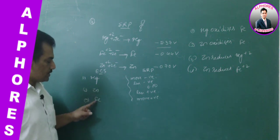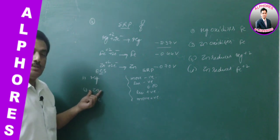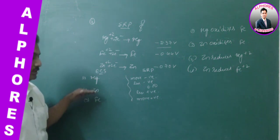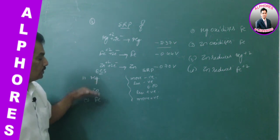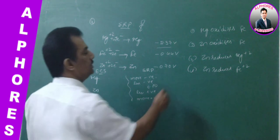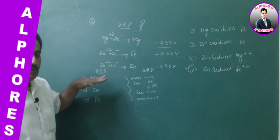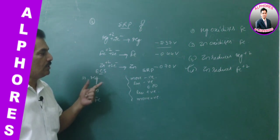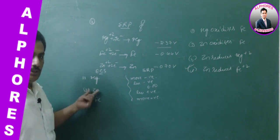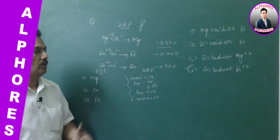Next, zinc reduces magnesium — magnesium is above and zinc is below, so zinc cannot reduce magnesium ions; that is wrong. The last statement is zinc reduces iron. Zinc is above iron in ECS, so zinc can behave as a reducing agent towards iron ions. That is why the fourth option is the correct answer. Just observe: the above metal can behave as best reducing agent towards the below metal. From that concept, zinc is above iron so there is a chance for zinc to reduce Fe²⁺ ions.